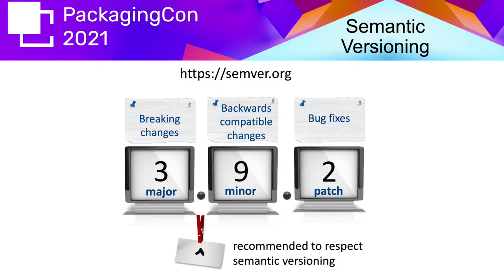To start with, let me briefly recap what semantic versioning is. The full specification can be found on semver.org, and any package release that wants to be semantic versioning compliant is supposed to convey in the version number what the purpose of the next release is. If the next release is only a patch — so you're only introducing bug fixes — then you will just update the third component of your version number.